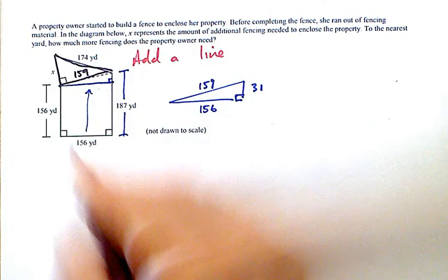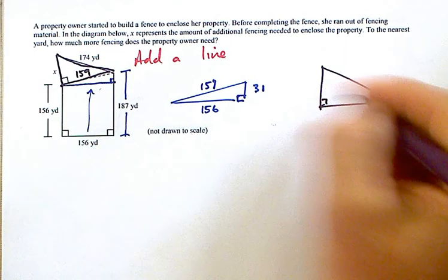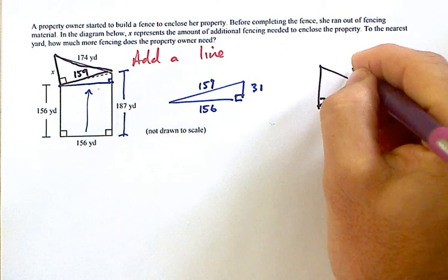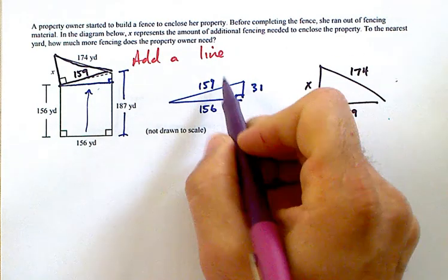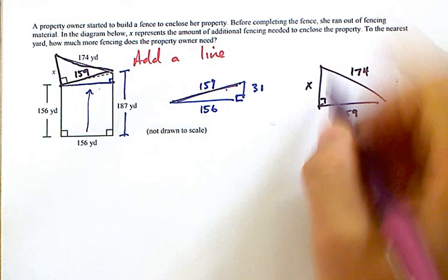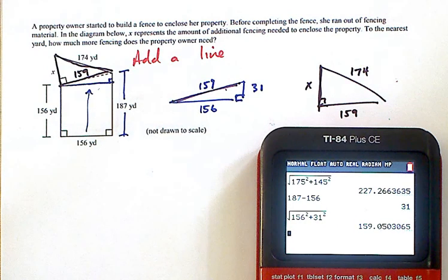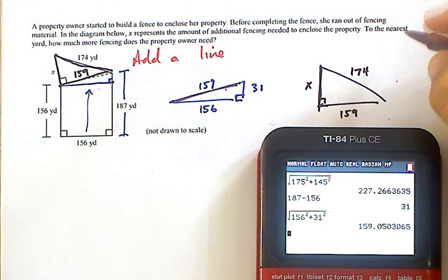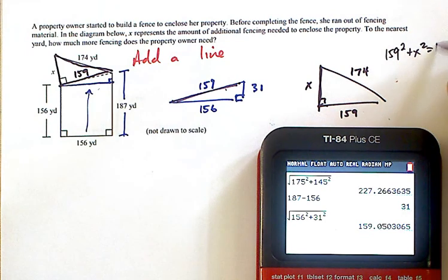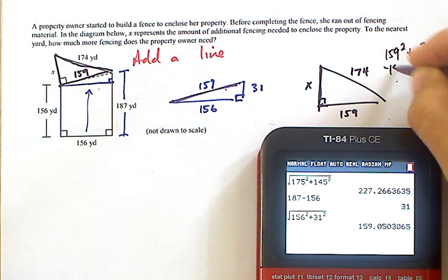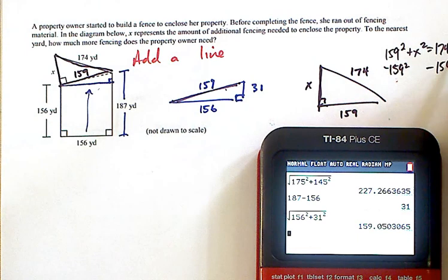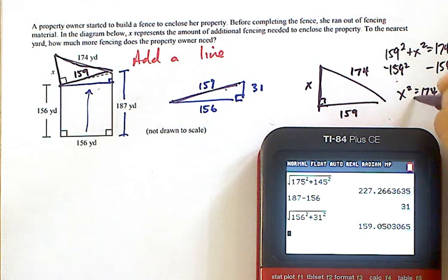Now let me pull this triangle out as well, which is a 159 and a 174. Now here I'm solving for hypotenuse, the side opposite the right angle. Here I'm solving for one of the legs, one of the sides that makes up the right triangle. So this is a little different. What ends up happening when you do this, because you're doing 159 squared plus x squared is equal to 174 squared, really what you're doing is you're subtracting the 159 squared from both sides, and then you get x squared is equal to 174 squared minus 159 squared. So you end up just basically taking the square root of that.